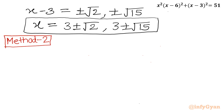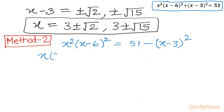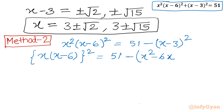Now method number 2, where I will write our equation in one specific form. Let me write x², (x-6)², and (x-3)² — I will take (x-3)² to the right-hand side. So on the left I have x times (x-6), the whole square, and on the right-hand side I expand (x-3)² using the (a-b)² formula to get x² minus 6x plus 9.